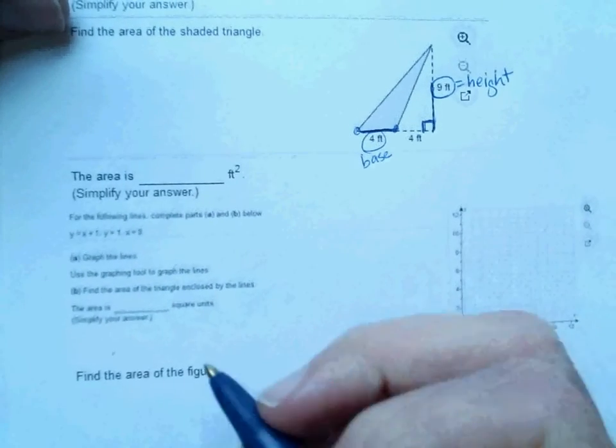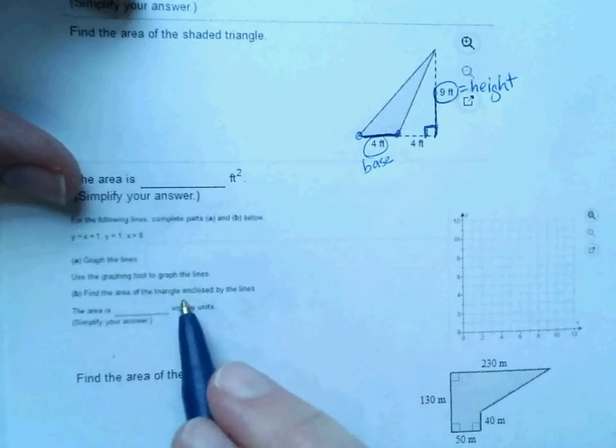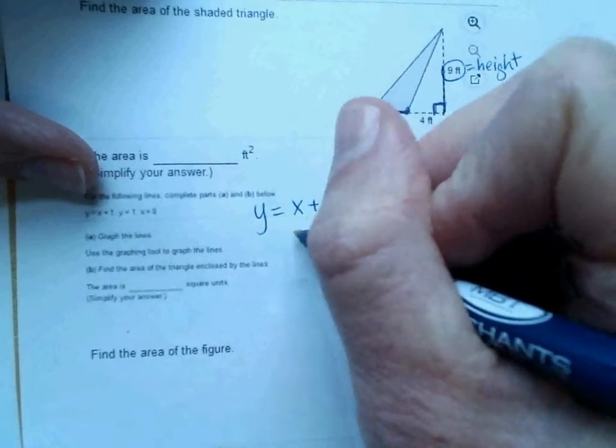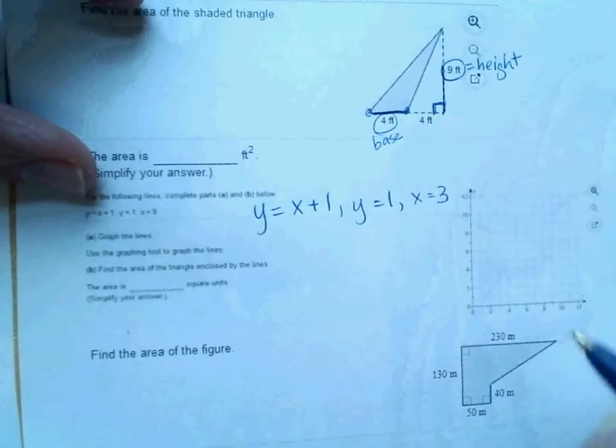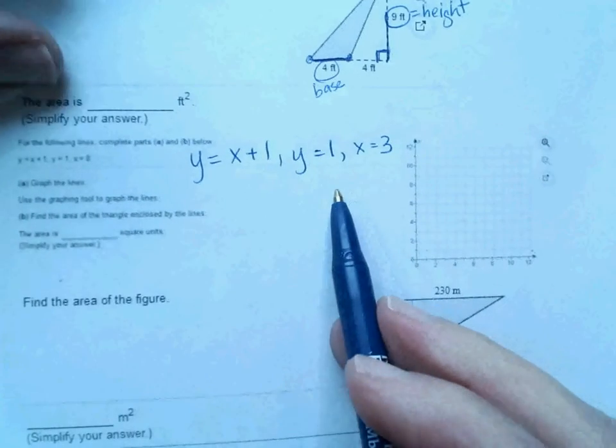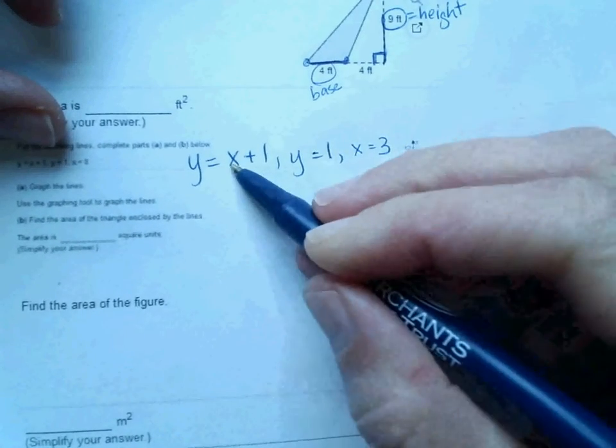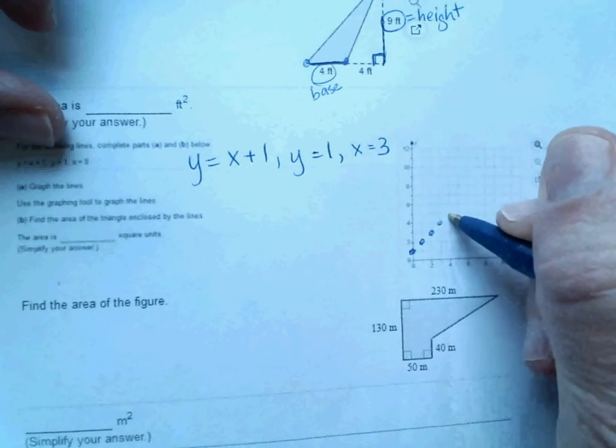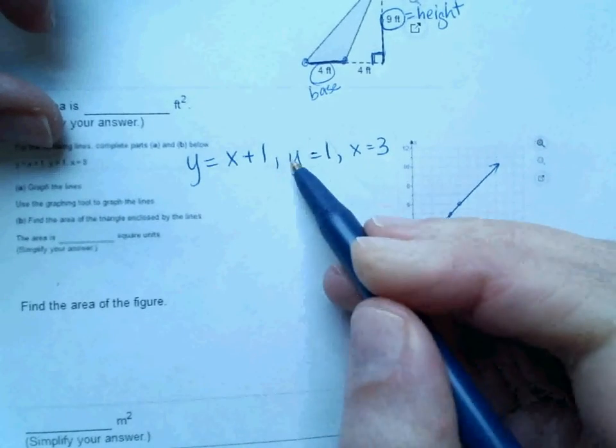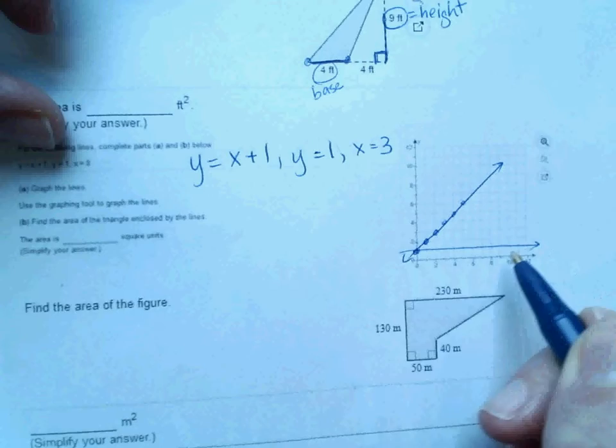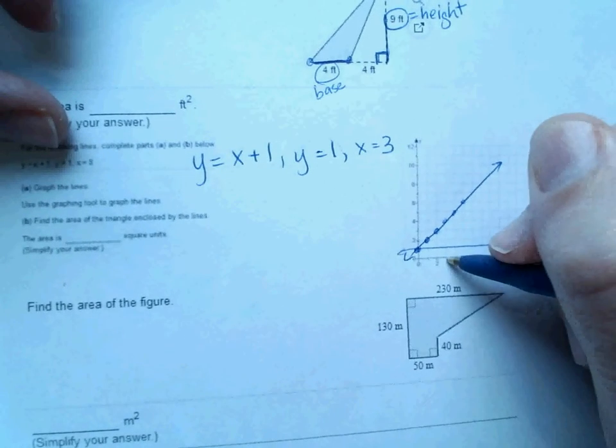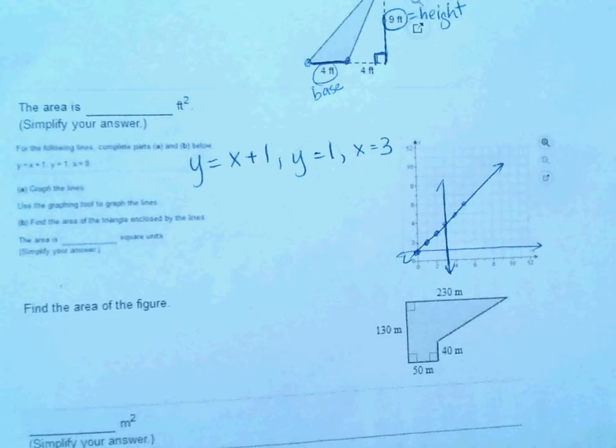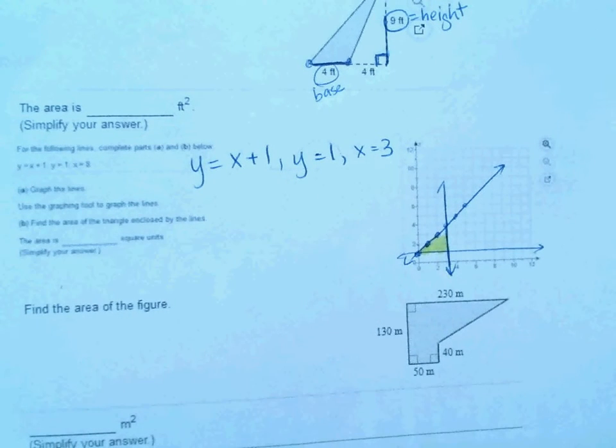Okay, the next one says for the following lines, graph the lines and then find the area of the triangle. And it's very hard to see, but it says y equals x plus 1, y equals 1, and x equals 3. So if you don't know what those look like, you would graph them on Desmos. I'm going to show you right here. This one has a y-intercept of 1 and the slope is 1, so up 1 to the right one. So that's what that one would look like. And then the y equals 1 is a horizontal line at 1, so it would look like that. x equals 3 is up and down, vertical, at 3. So 1, 2, 3, and so hopefully you can see that triangle right there.